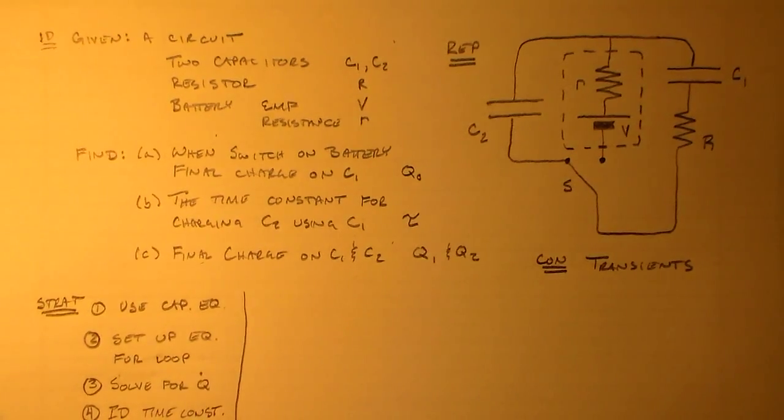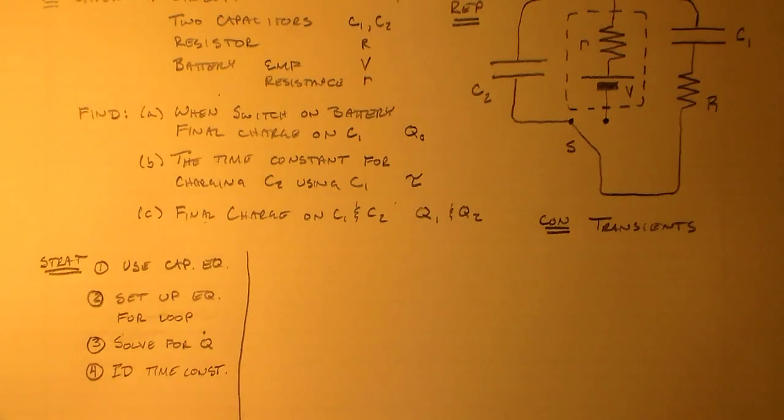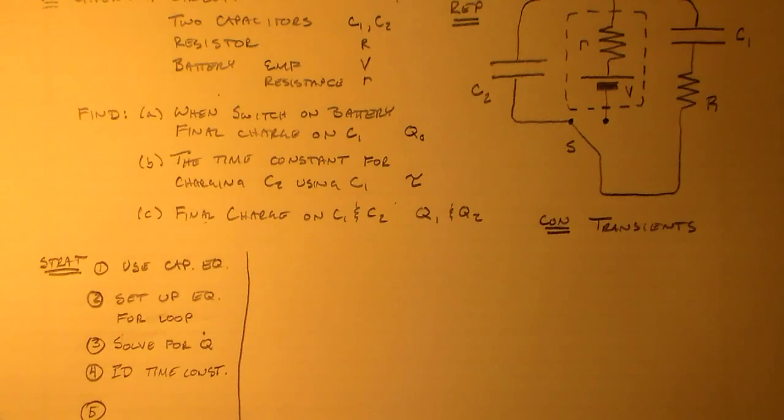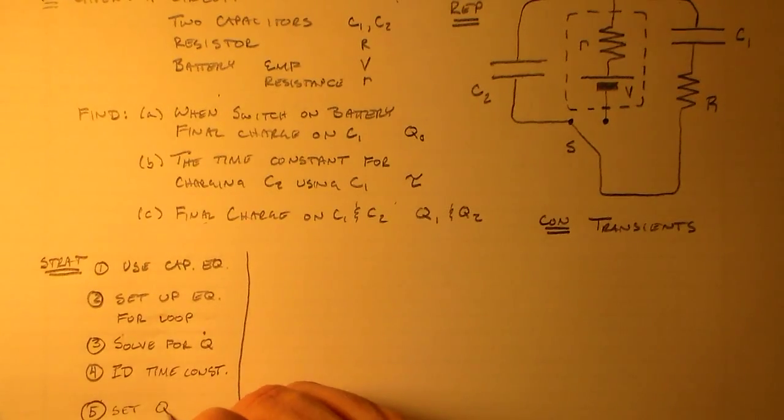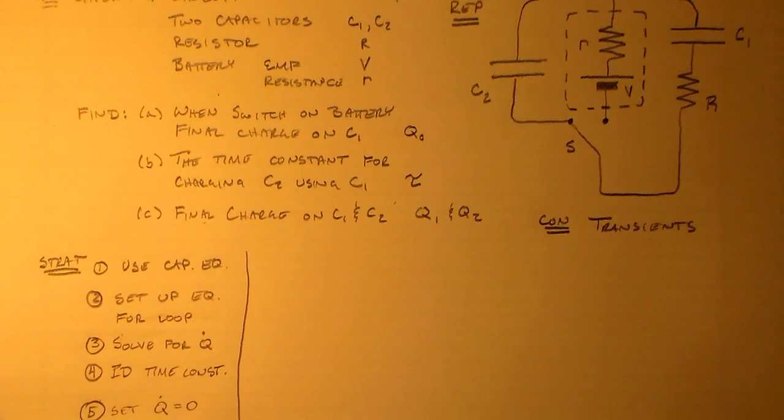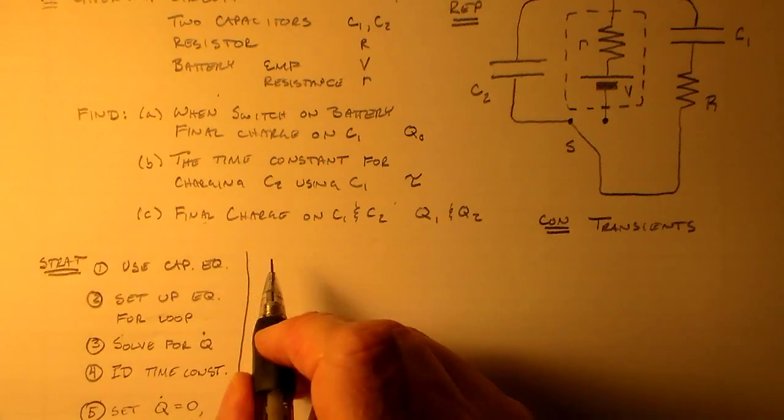The concept here is transients, equilibrium, whatever I want to call it. And so, what's my strategy? Well, for A, my strategy is to use the capacitor equation. For this, for this case, that's all we'll need to do. For B, what would I like to do? Well, I'd first like to set up the equation for this outer circuit, for outer loop. I'll just call it a loop because setting it up will not be much.